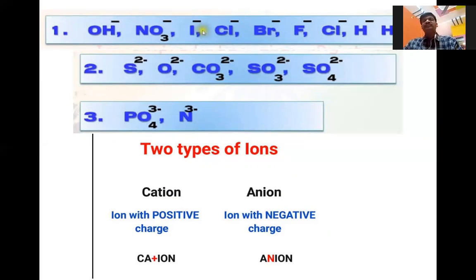We can classify ions into two types: cation and anion. Cation means having positive charge — remember, the 't' in cation can be written as a plus sign, so cation is positive charge. Anion — 'an' carries negative charge; anion has two ends so it is the negative ion. Cation: loss of electrons, positive charge. Anion: gain of electrons, negative charge. We will remember without confusion.